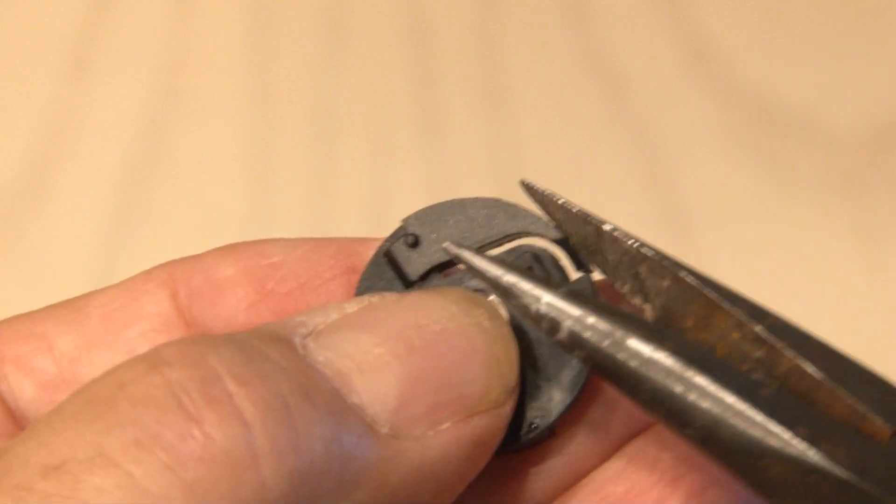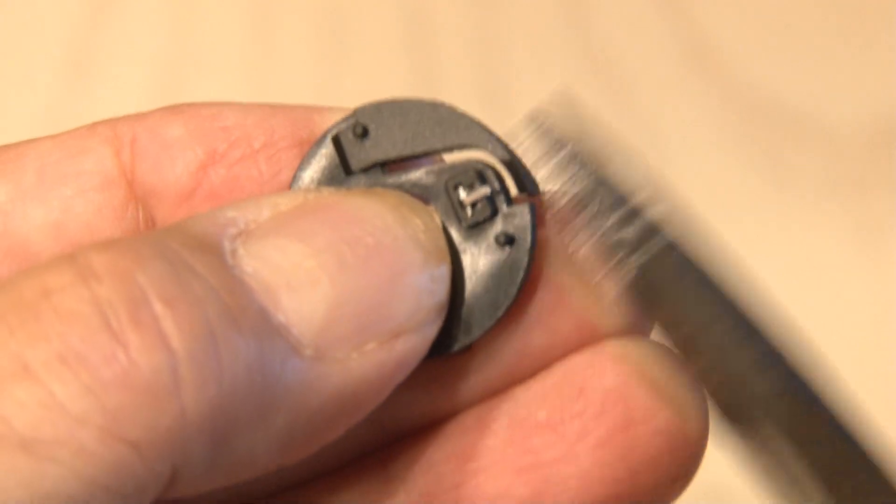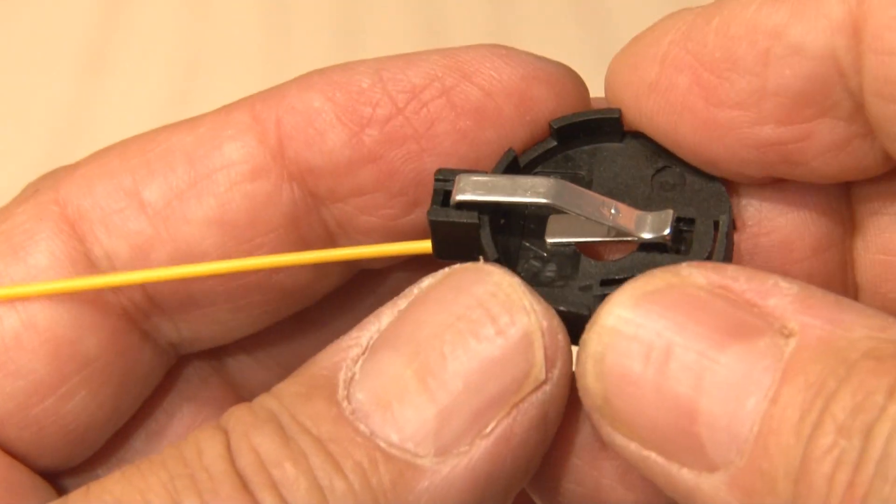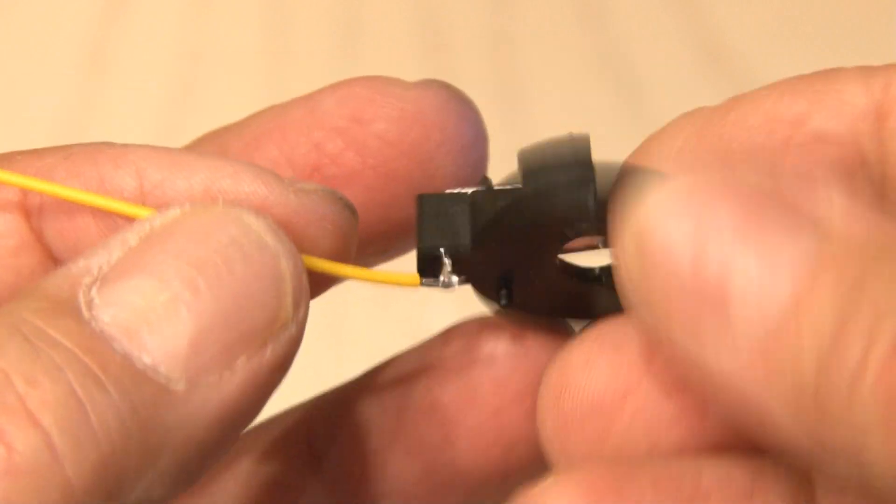They have these little tabs for the positive and negative connections that need to be bent down out of the way, so we'll do that first. Then we'll solder one small wire to the positive connection, that's the one with the little clip that goes on top of the battery.